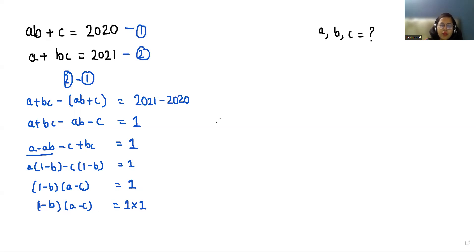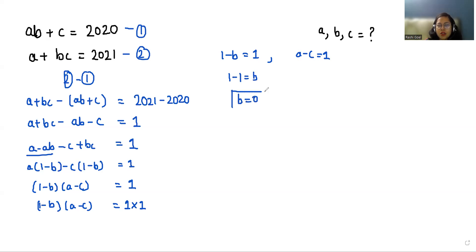Now we have two cases. In case one: 1 − b = 1, so b = 0. And from the other factor: a − c = 1, which gives a = 1 + c.